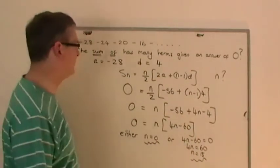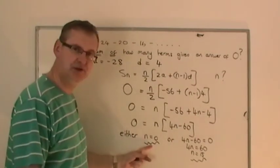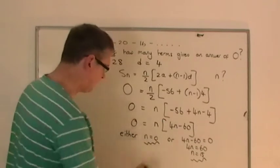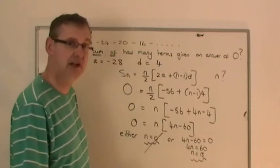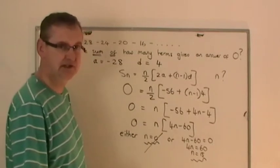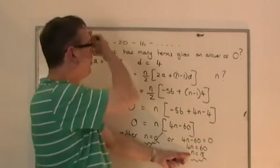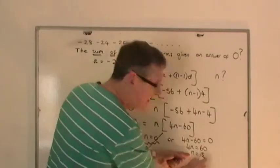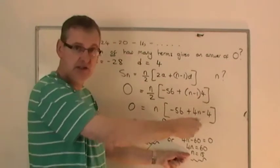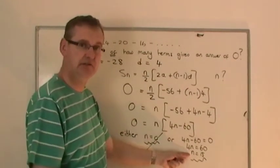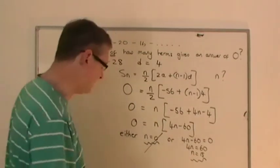Well, if you think about it, if this is the series, if we don't have any terms at all, we don't have a series. So this answer can be ignored. It's a silly or theoretical answer. You can't have the series if n is nothing. The series doesn't exist. So the answer to the question is, when you add up 15 terms of this series, the negatives and the positives will cancel each other out, giving a sum of 0. So the answer to the question is 15.